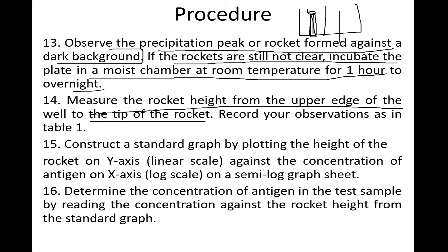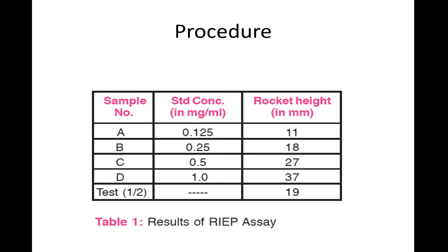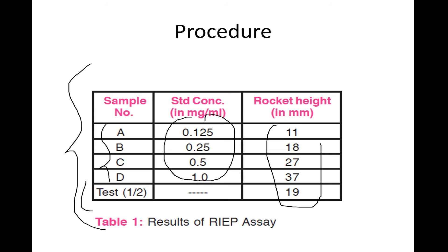Construct a graph with rocket height on the y-axis and antigen concentration on the x-axis. For example, with four known samples and one unknown sample, if the unknown sample has a rocket height of 19 mm, plot the known concentrations and their rocket heights to generate a standard curve.